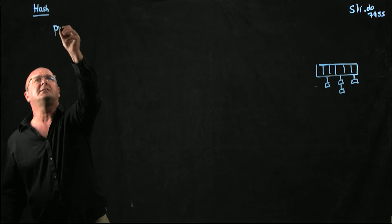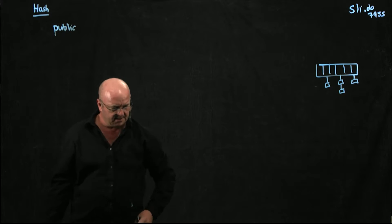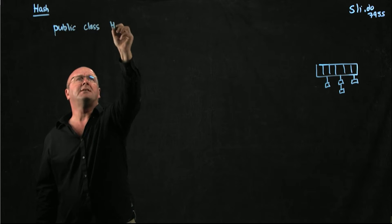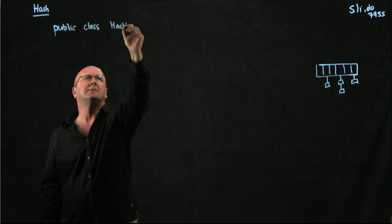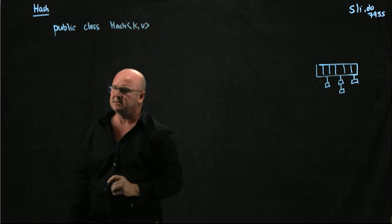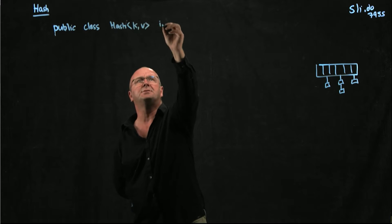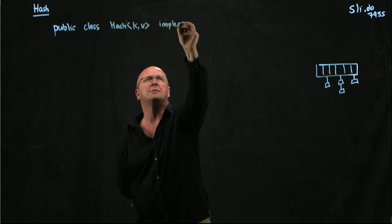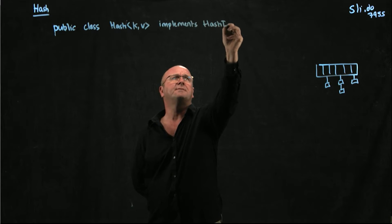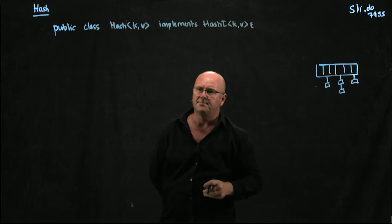So we're going to have a hash class which is going to have generic keys and values. And our hash class for assignment 2 has to implement the HashI interface for keys and values.